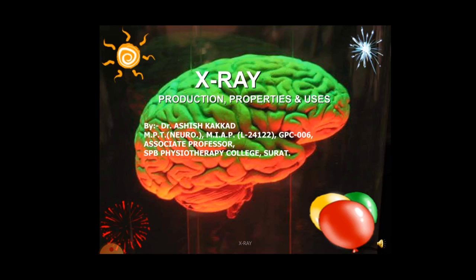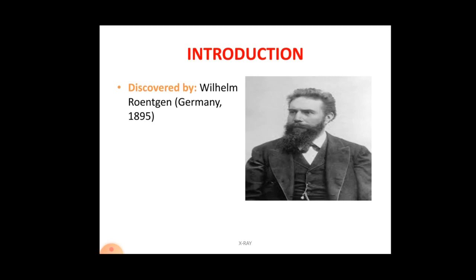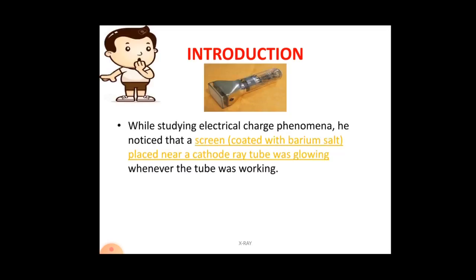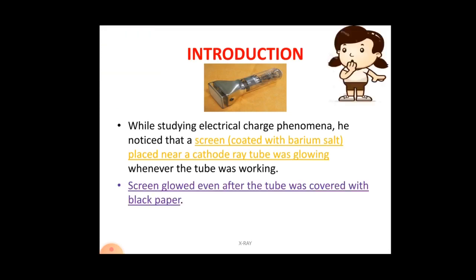X-rays were discovered by Wilhelm Röntgen in Germany in the year 1895. Actually, the discovery of x-rays was totally accidental. When Röntgen was studying electrical charge phenomena in his laboratory, he noticed that a screen coated with barium salt started glowing whenever it was near the cathode ray tube. To further check, he covered this screen with black paper, but even after that the screen was glowing, showing that rays were passing through the black paper to reach the screen.